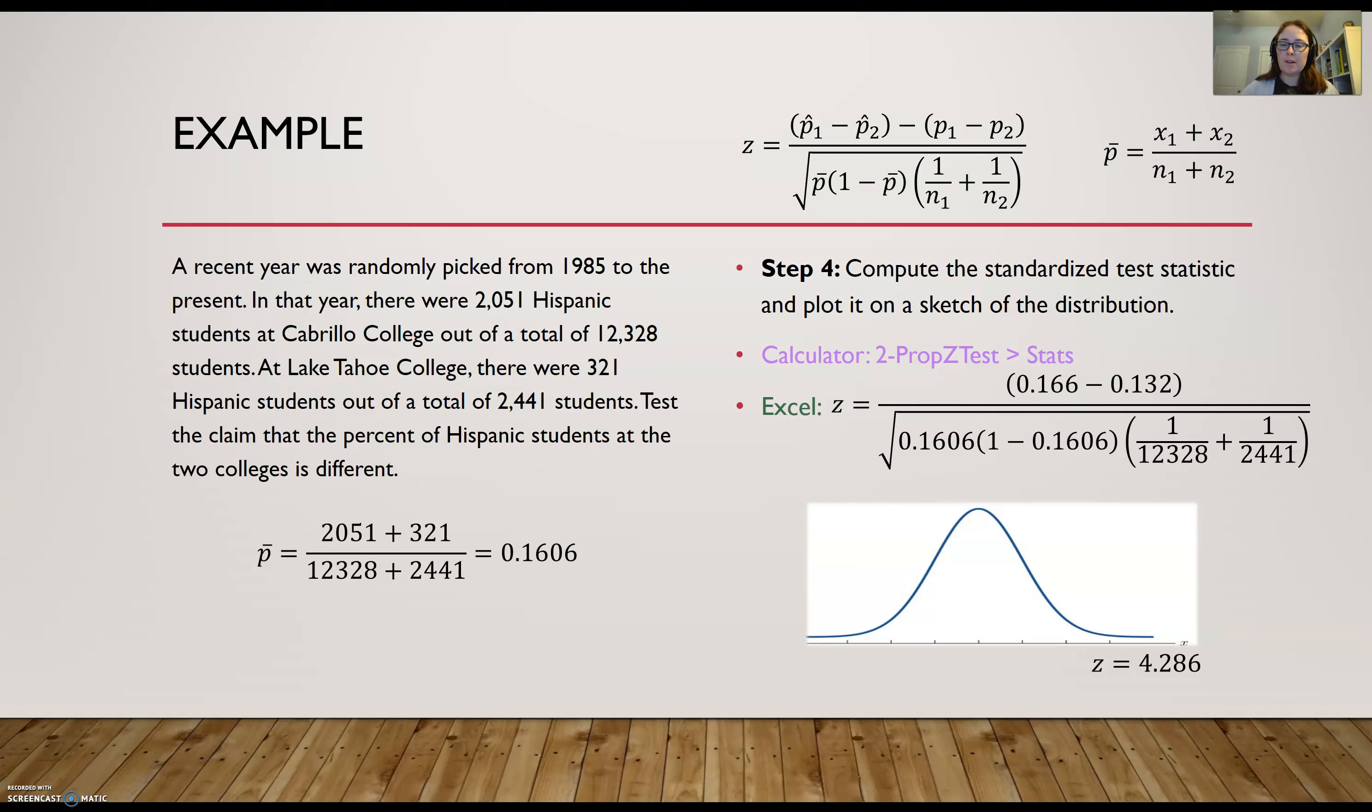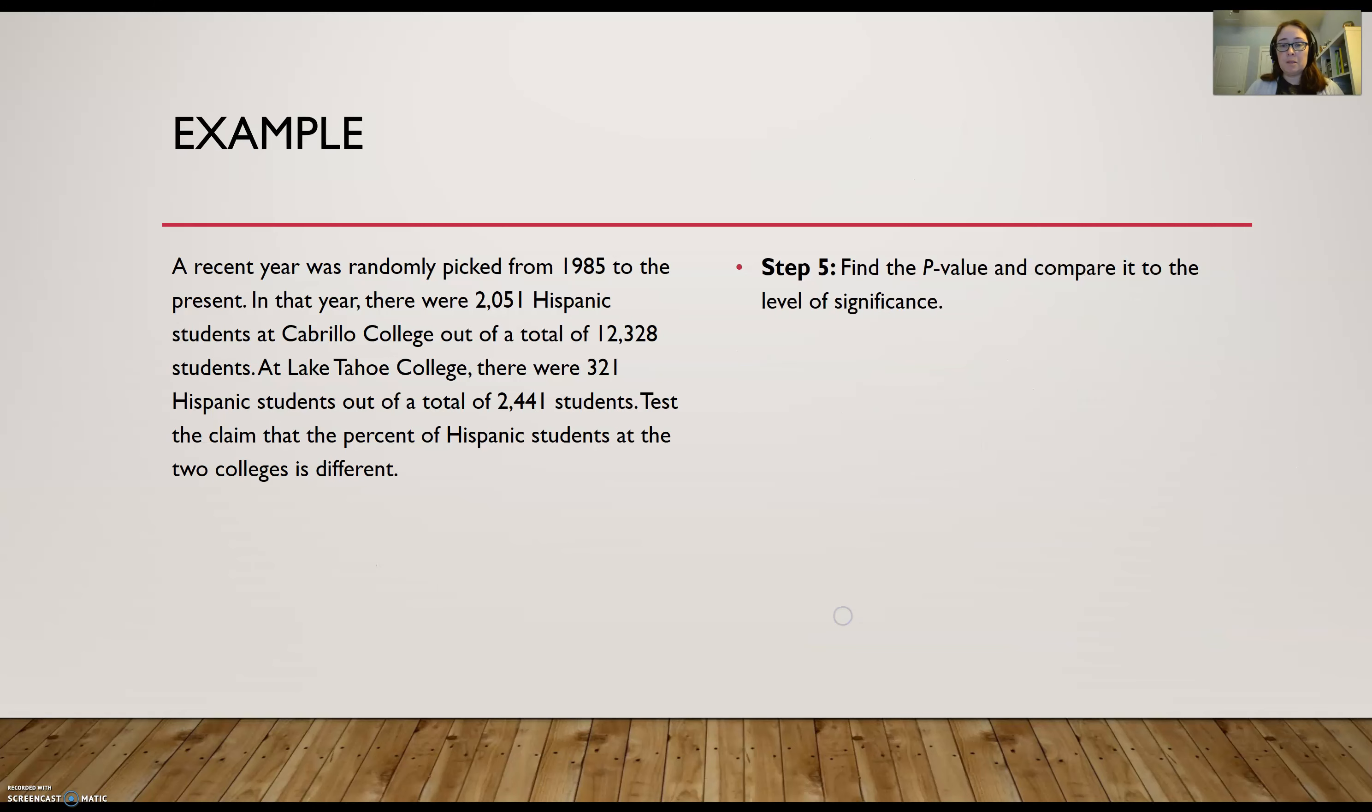So I've got about 4.286 on my distribution here. I want to sketch this out. So somewhere out here, I want everything to the right here. And this was a two-tailed test because our alternative hypothesis said not equal to. So that means that I also have the negative of the Z-score on the other side. And I want all the area to the left of that to get a two-tailed p-value. Now, in my calculator, I already got the p-value. Didn't even need to have that information. I just plugged in the alternative hypothesis.